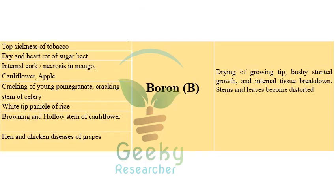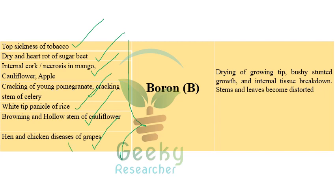Boron deficiency causes top sickness of tobacco, dry and hot rot of sugar beet, internal cork necrosis of mango, cauliflower, and apple, cracking of pomegranate, cracking stem of celery, white tip panicle of rice, browning and hollow stem of cauliflower, and hen and chicken disease of grapes. Most important: hen and chicken disease of grapes and top sickness of tobacco.